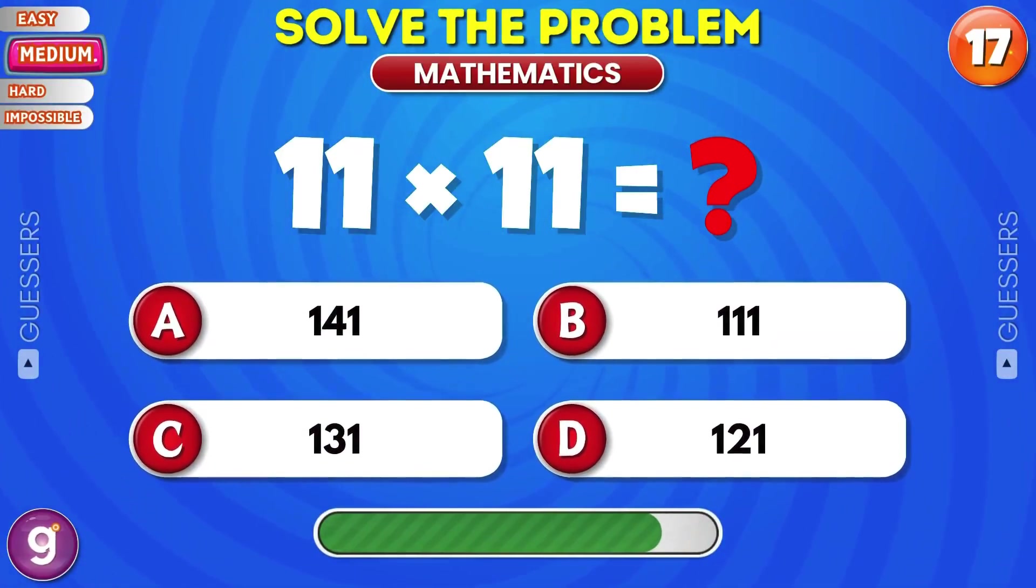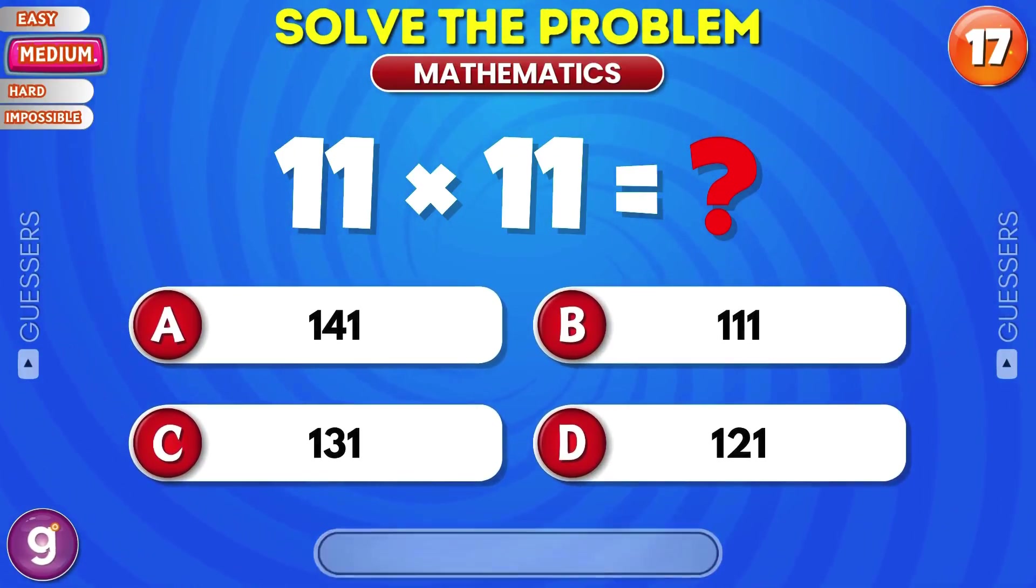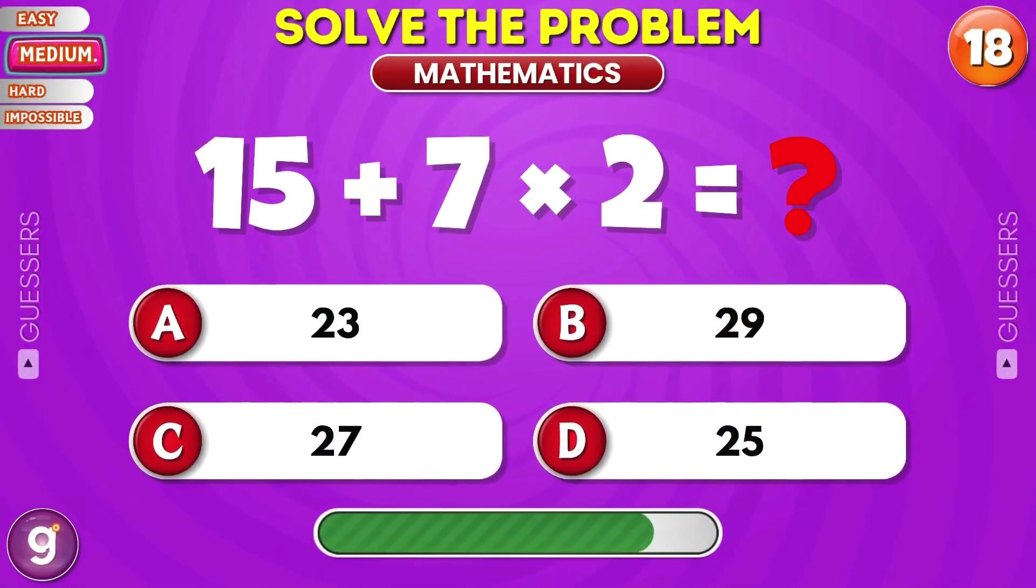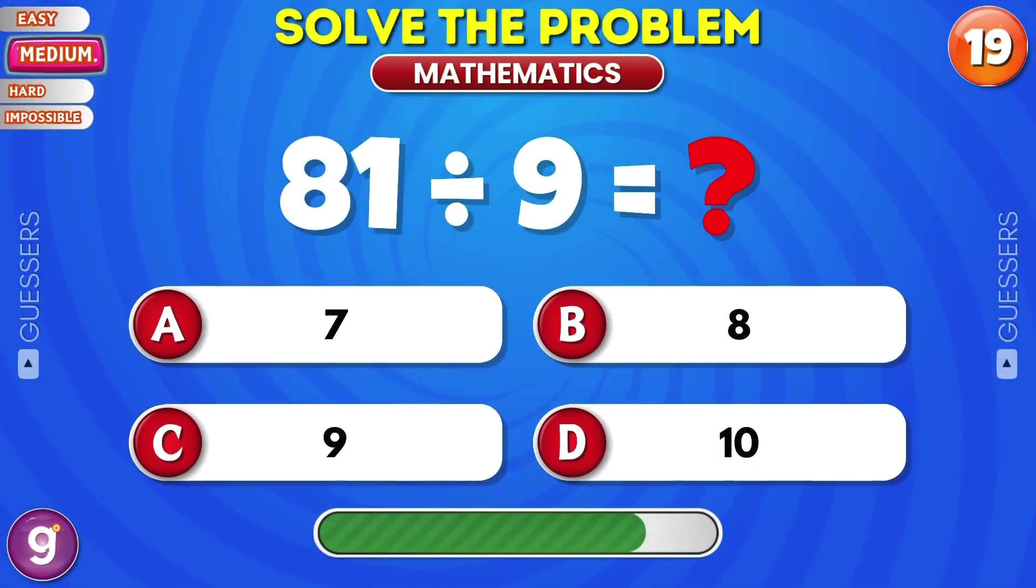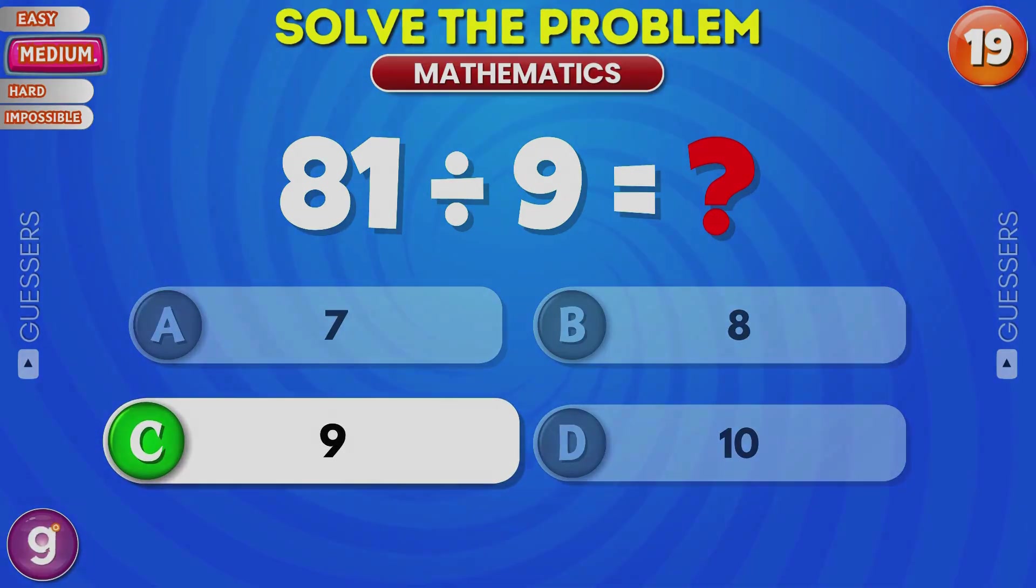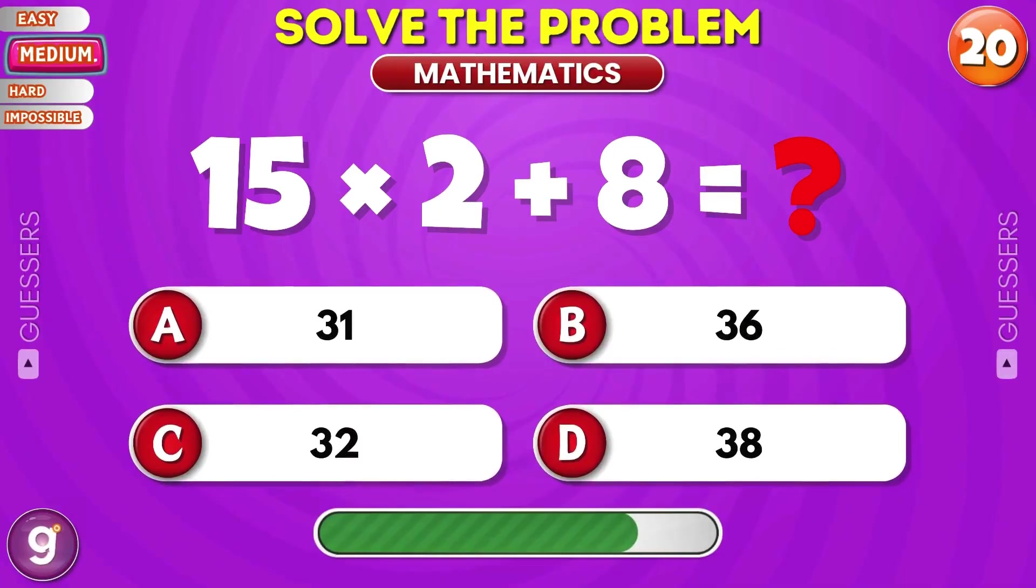How much is 11 into 11? 121. What is 15 plus 7 times 2? 29. How much is 81 divided by 9? 9. What is 15 times 2 plus 8? 38.